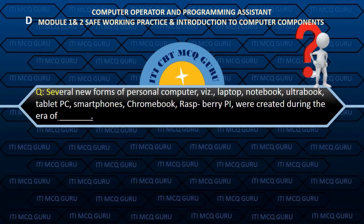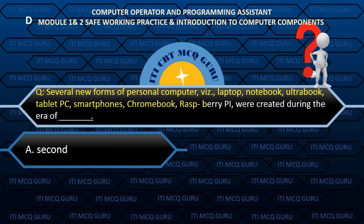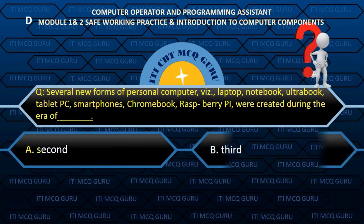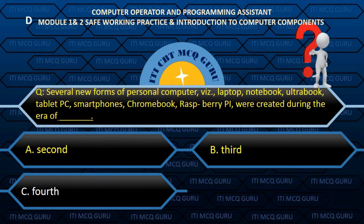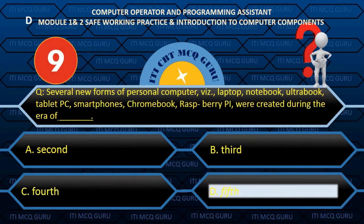Several new forms of personal computer — workstations, laptops, notebooks, ultrabooks, tablets, PCs, smartphones, Chromebooks, and Raspberry Pi — were created during the era of the fifth generation — Answer: D. 5th generation.